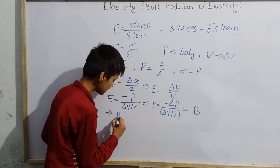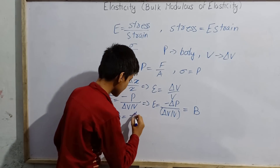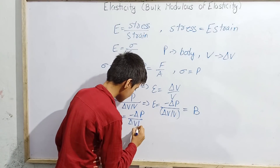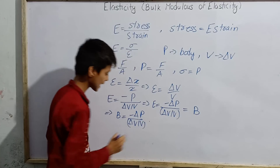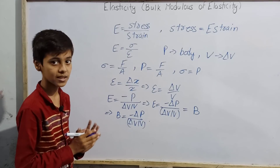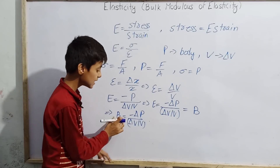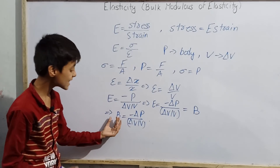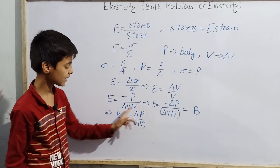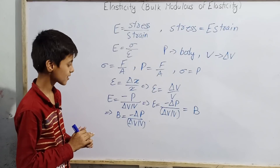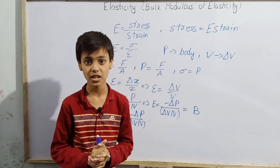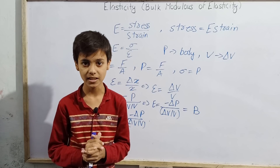Finally, B equals minus delta P divided by (delta V / V). This is the answer to what is bulk modulus of elasticity, and this is the final equation for bulk modulus of elasticity: B equals minus delta P over (delta V / V). This was my today's topic — if you haven't subscribed to this channel, please subscribe. Thank you, I'll see you next time.